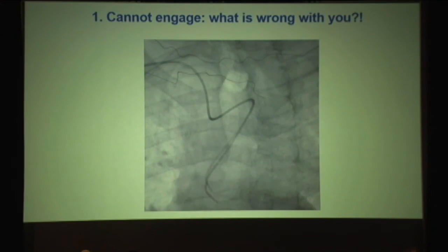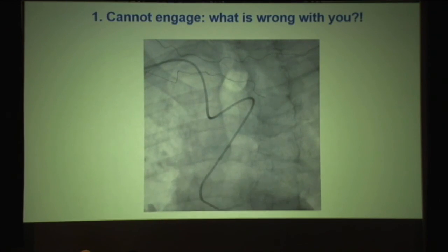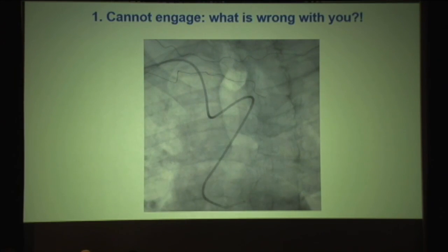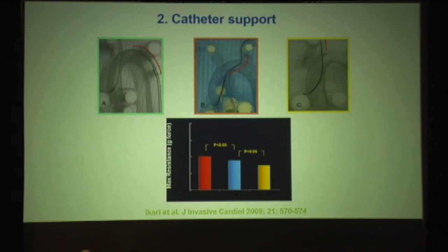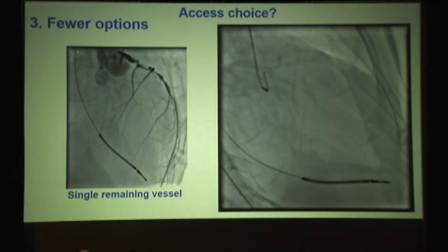Reason one: this is not an uncommon event — when you cannot engage the coronary. Is it the fellow's fault? I don't think so. Reason two: what is the support for doing complex procedures with radial? You can see the support in red — that's radial, versus femoral. So do you want adequate support or not? I'll leave it up to you.